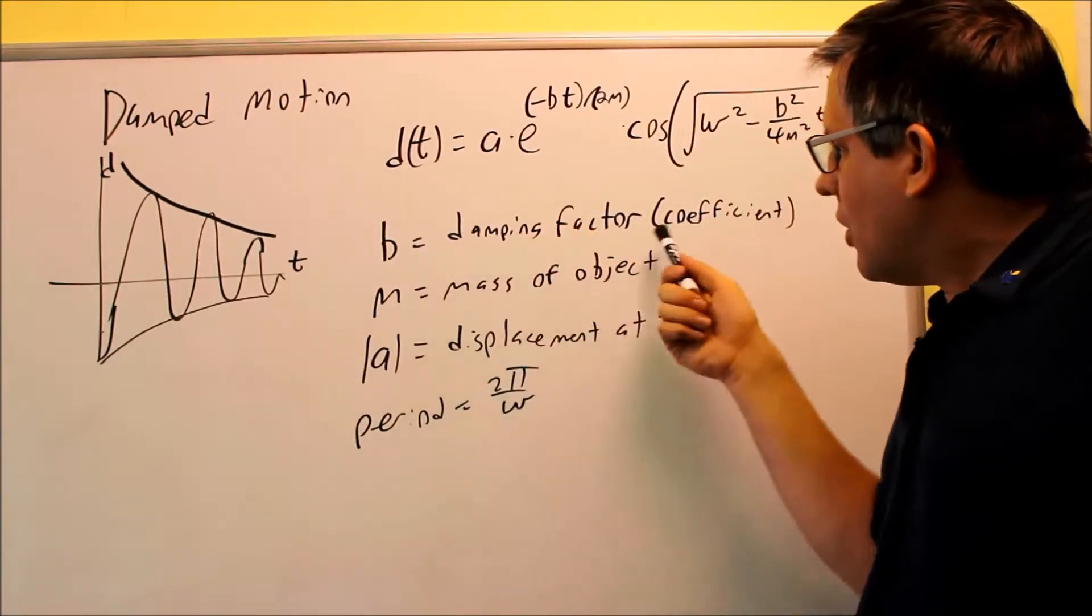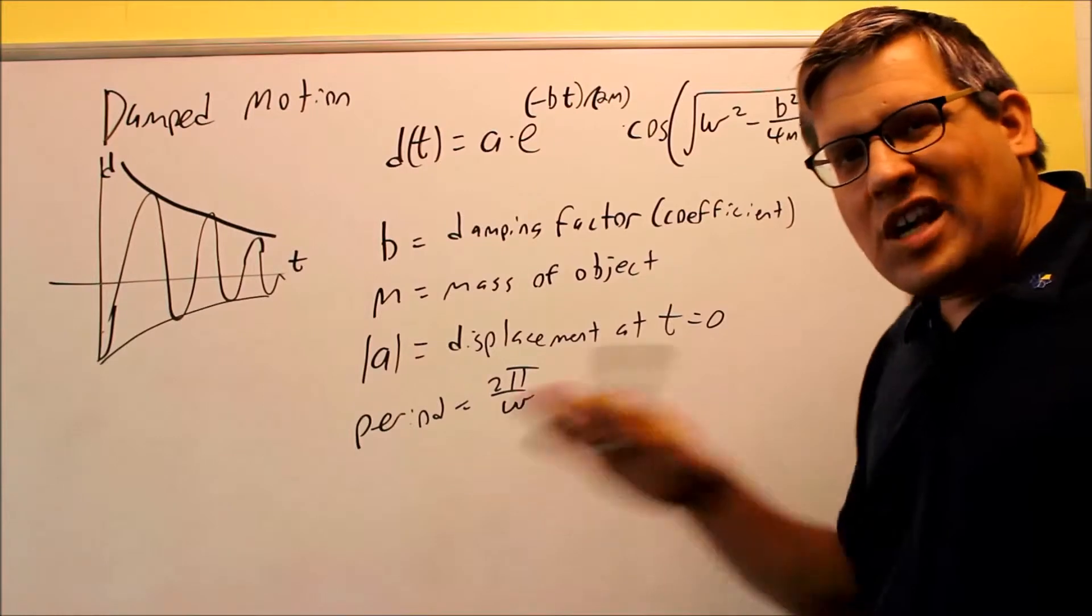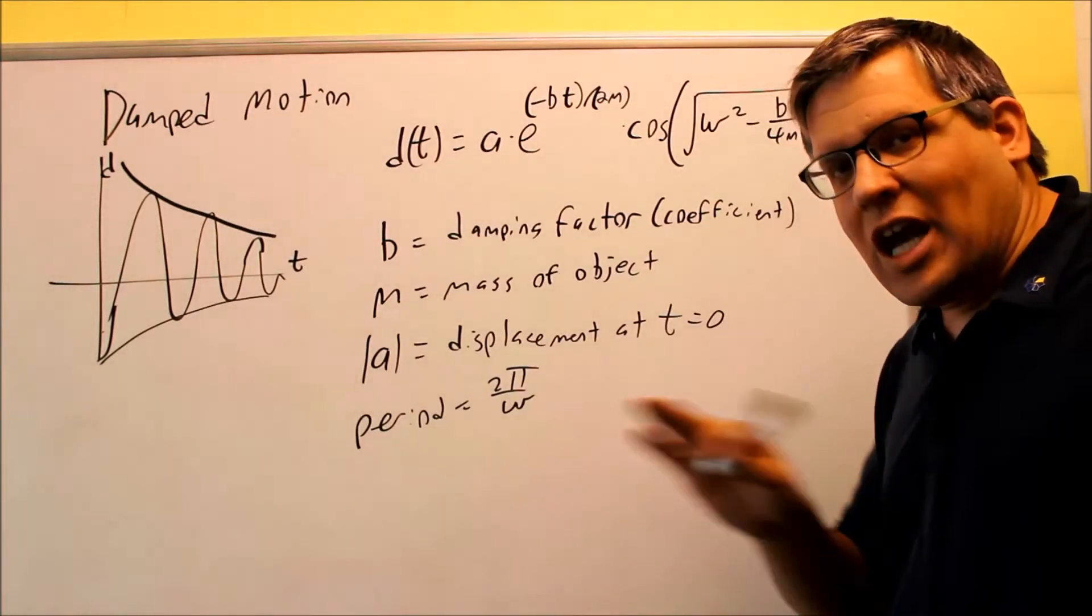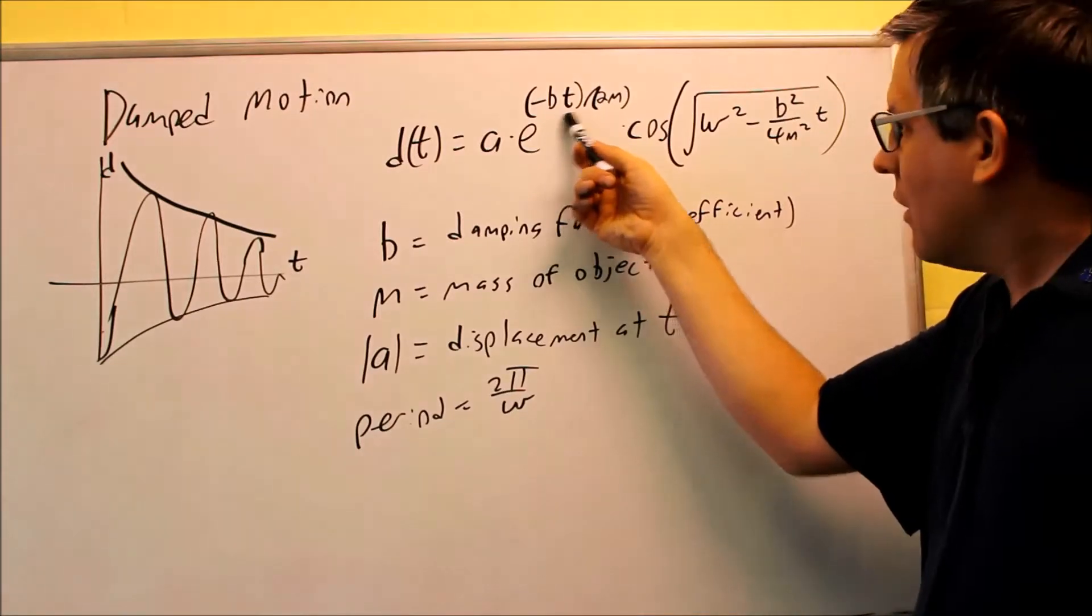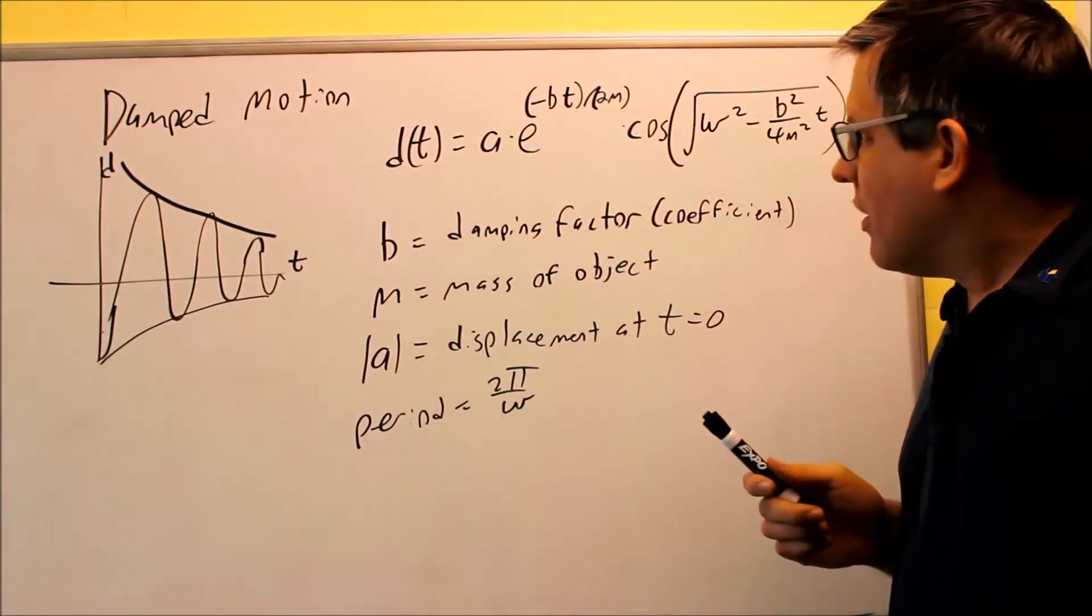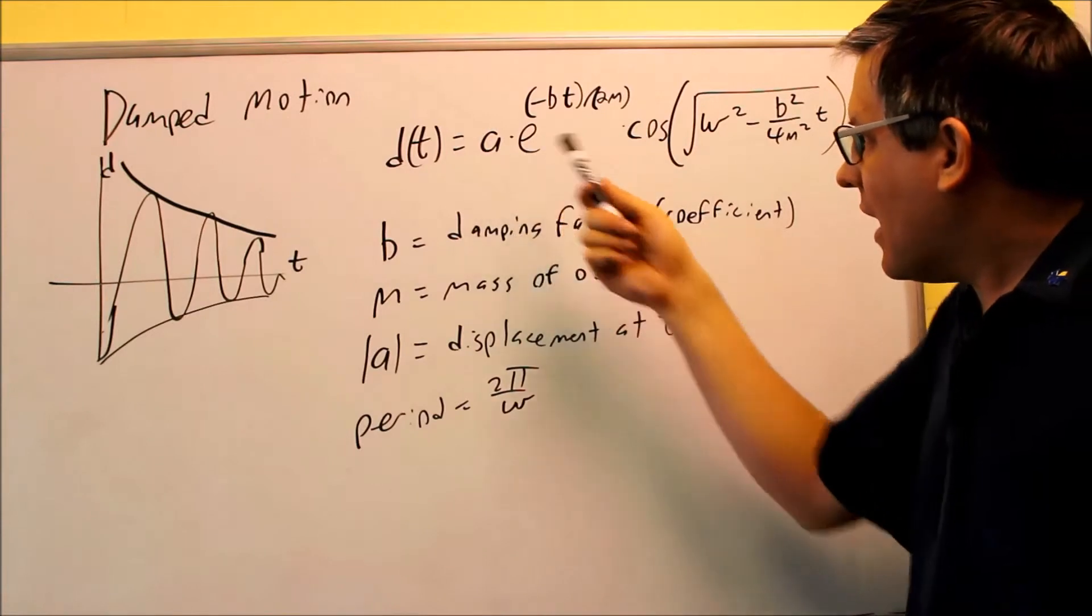Okay, then we have this right here. Now what happens if we have no damping factor? Let's suppose that B is zero. Now B equals zero means we have no resistance at all. Well, let's look at what happens. If I put a zero in for B, this whole thing turns into a zero. E to the zero is one, so I get A.